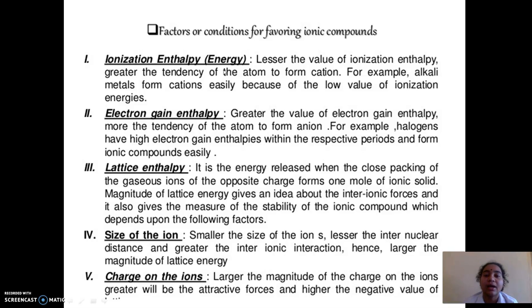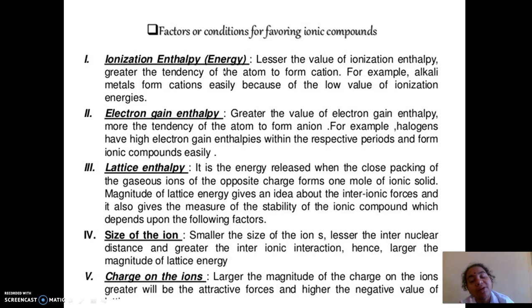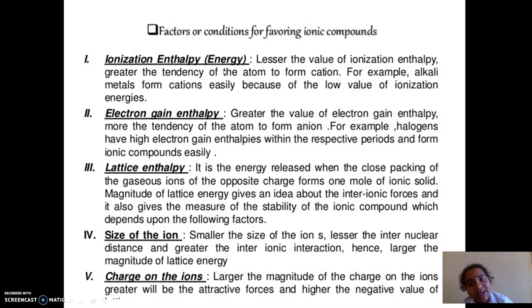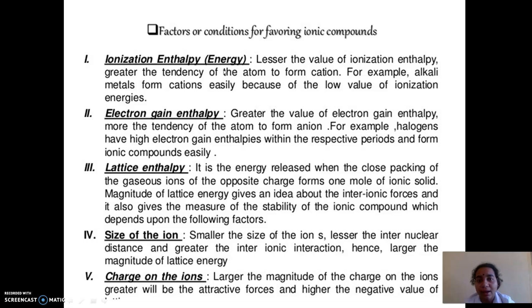In order to form an ionic bond, it also requires the addition of electrons — the transfer from one element to another. One element has to accept one or more electrons to form the ionic bond. That energy is known as electron gain enthalpy. Electron gain enthalpy is the energy released when an electron is added to the outer shell of a neutral gaseous atom in order to form an ion.